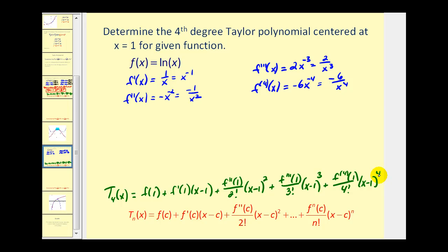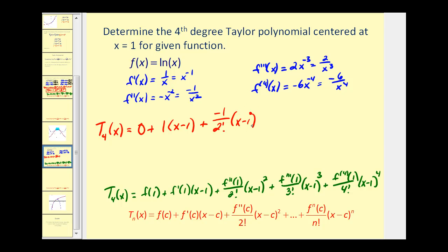Now let's find the Taylor polynomial. f of one is natural log of one, which is zero. Plus f prime of one is one times x minus one. Plus the second derivative at one divided by two factorial: that's negative one divided by two factorial times x minus one squared. Plus f triple prime of one divided by three factorial: that's two divided by three factorial times x minus one to the third. Plus the fourth derivative at one: that's negative six divided by four factorial times x minus one to the fourth power.